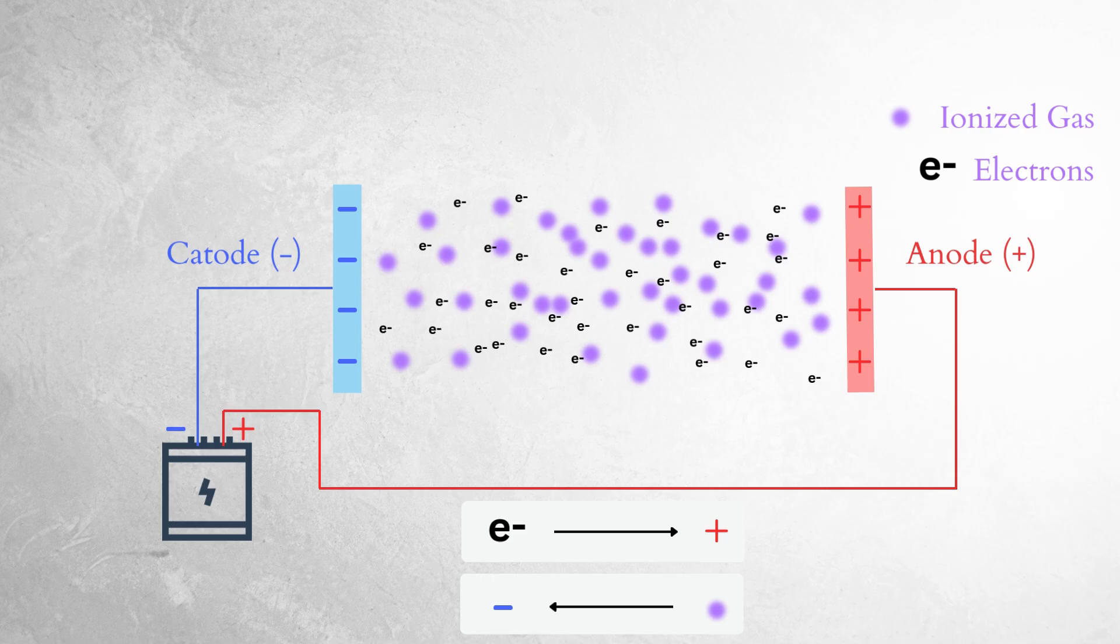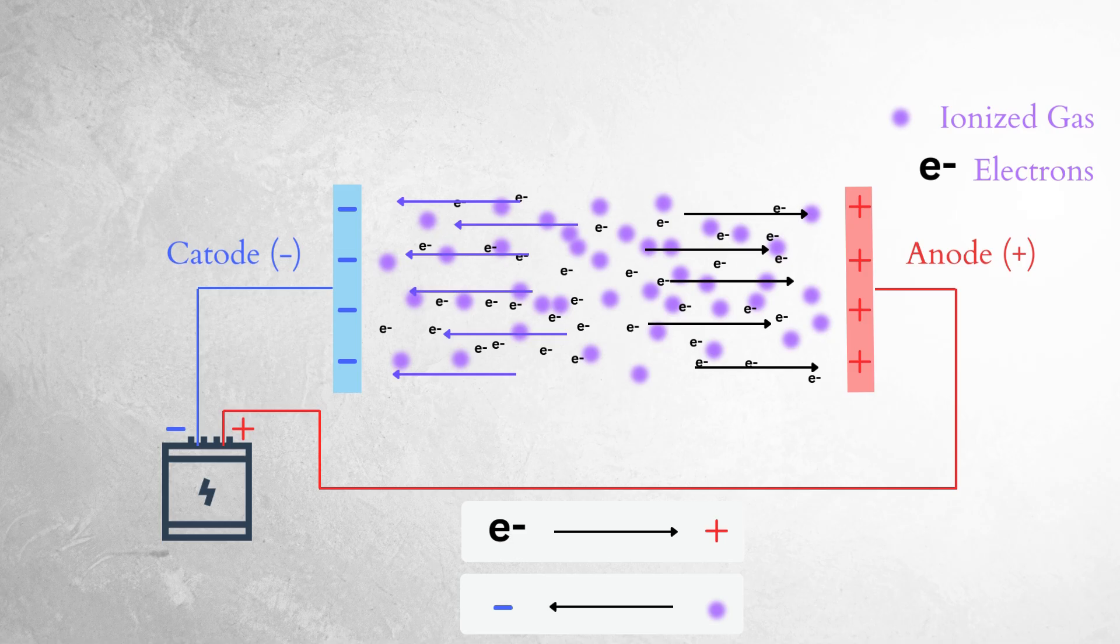The formed ions and electrons create more collisions, ionizing more atoms and separating more electrons. The electric potential drives the electrons toward the anode, while positive ions are driven toward the cathode, our parts.